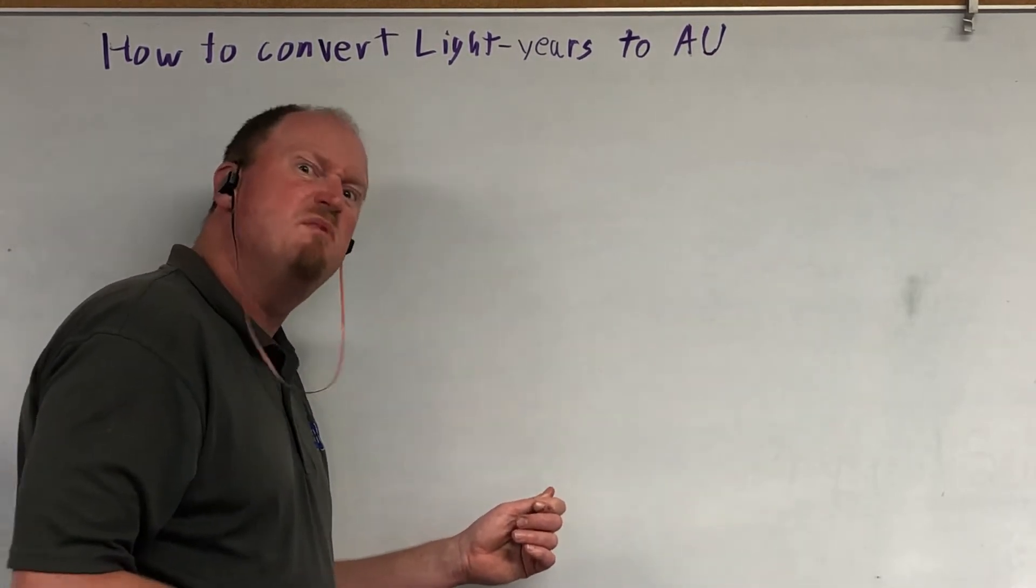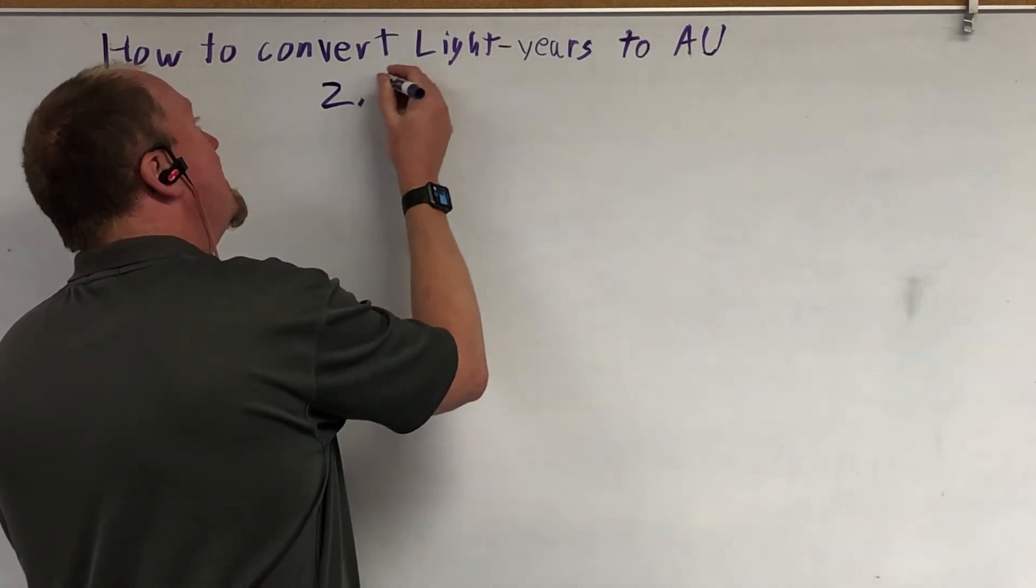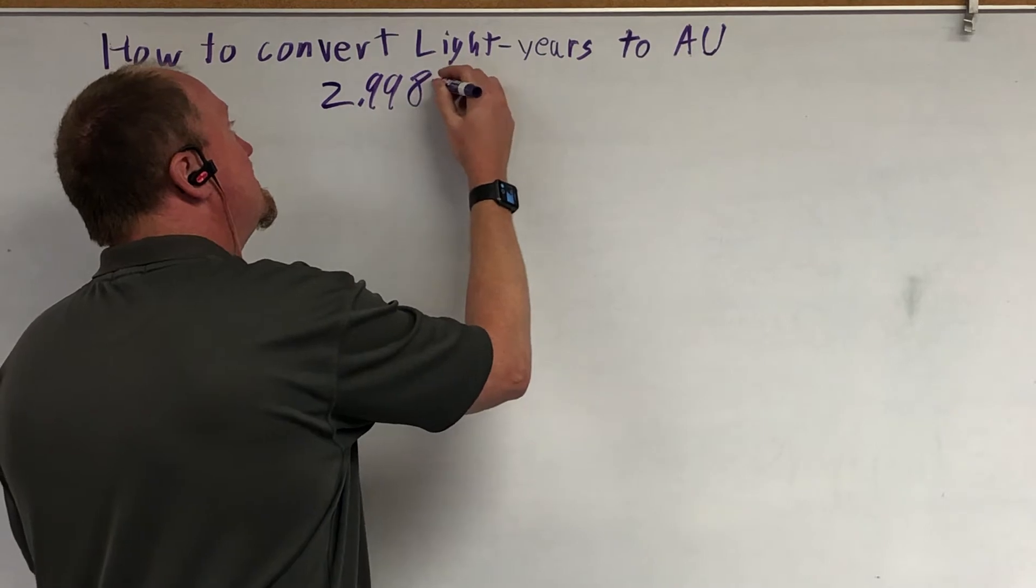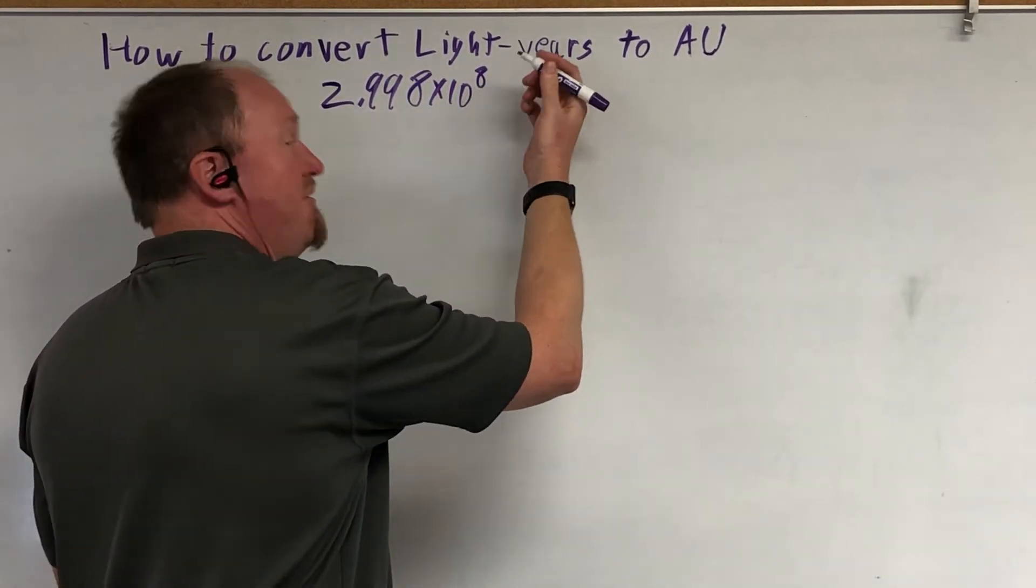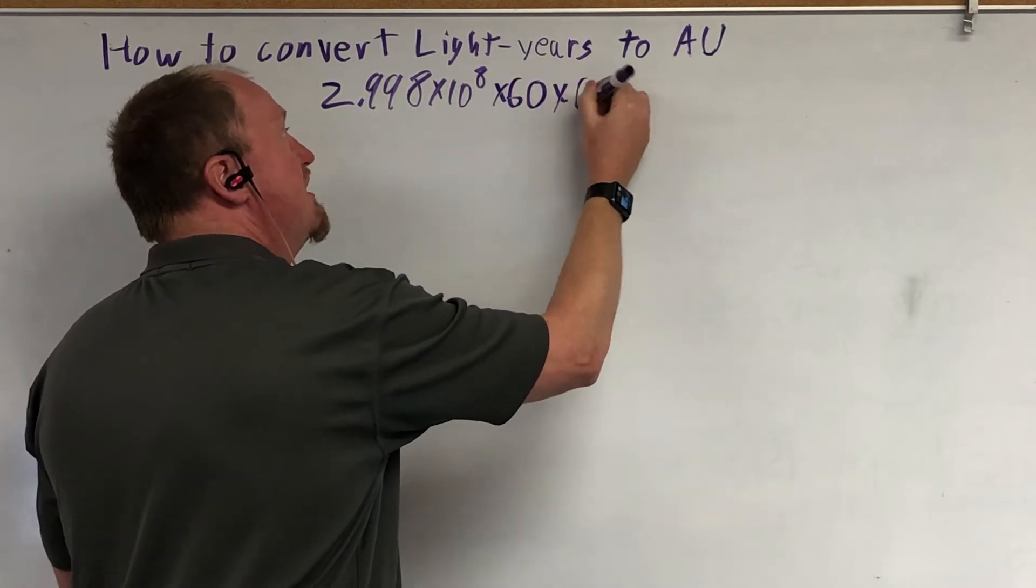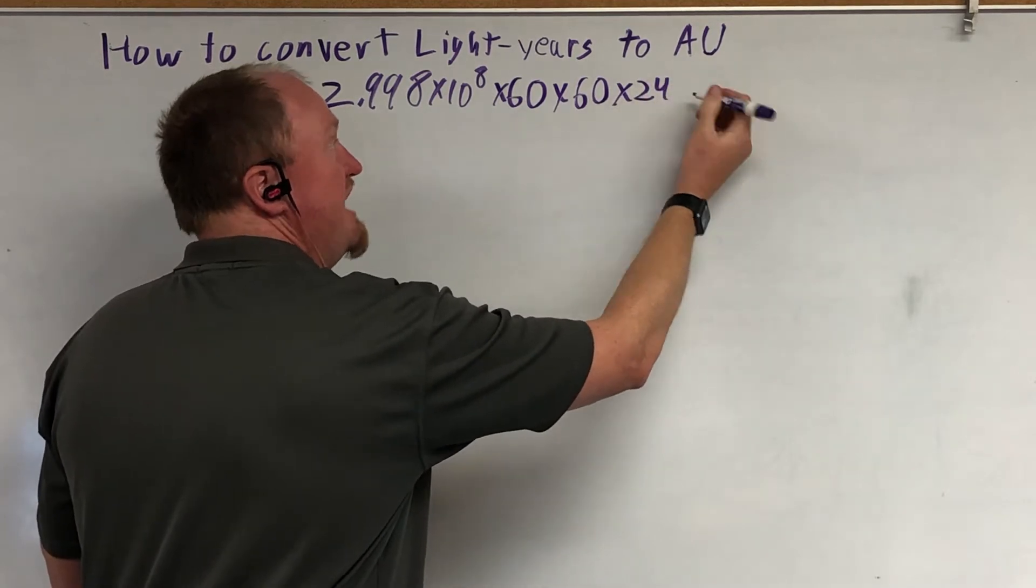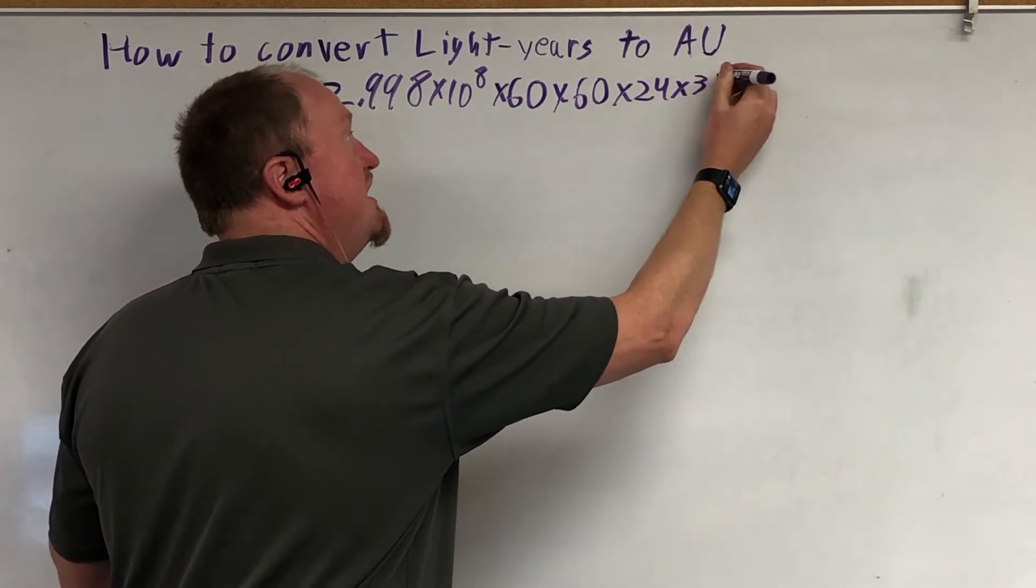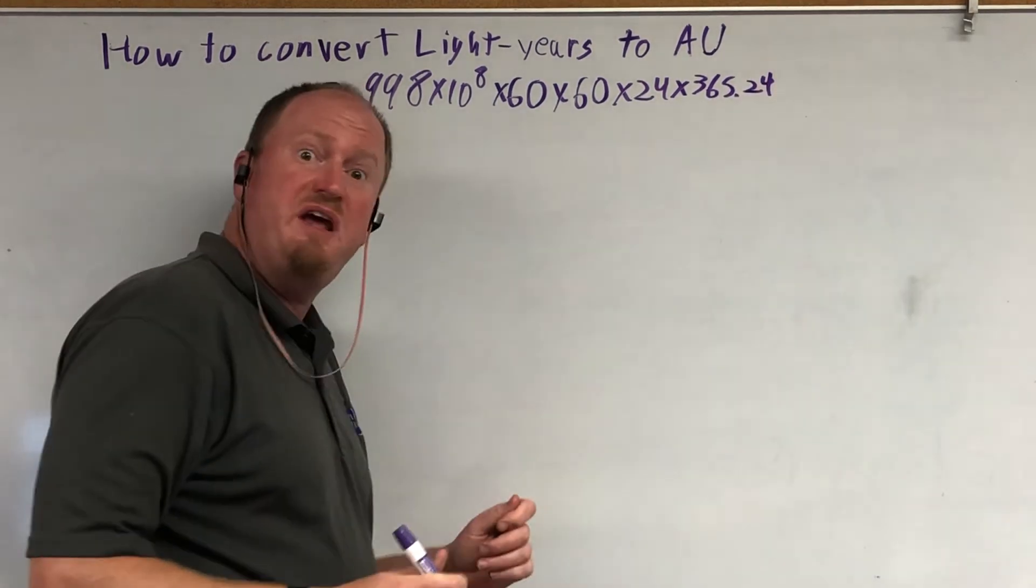Let's get started. Light travels 2.998 times 10 to the eighth meters every second. If you multiply that by 60, you get a light minute. Another 60, you get a light hour. Times 24, you get a light day. And times 365.24, you get a light year.